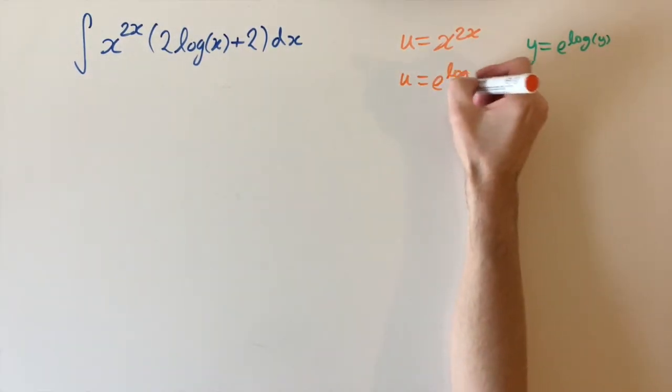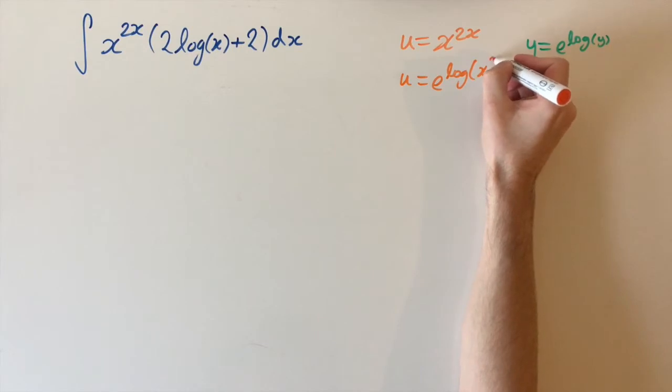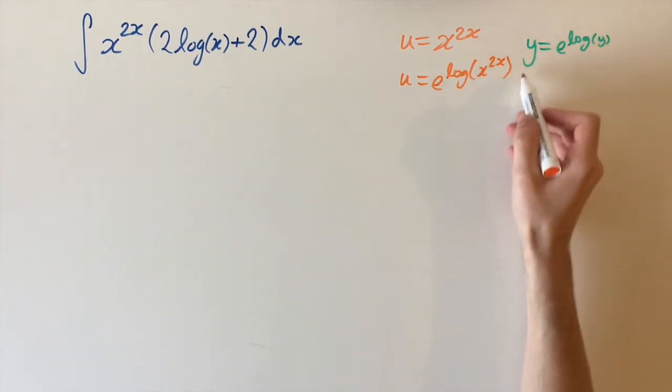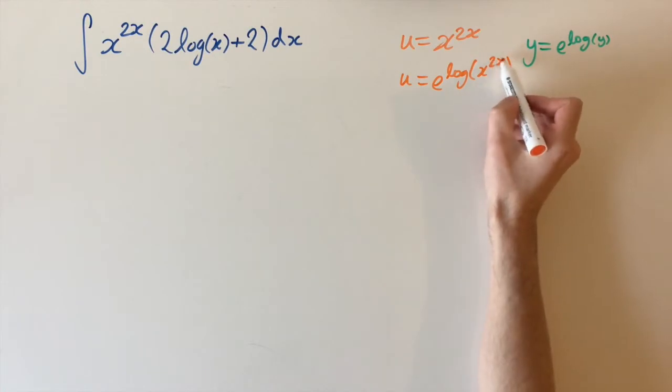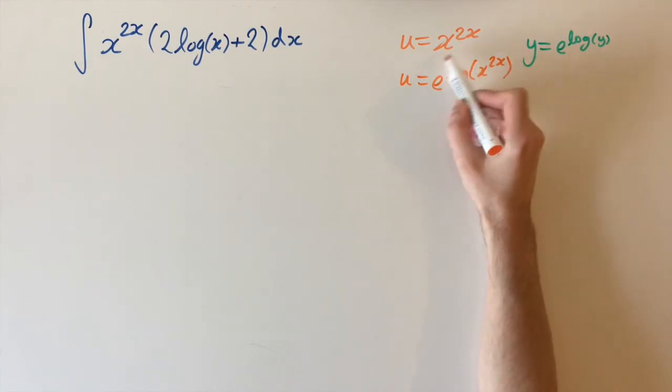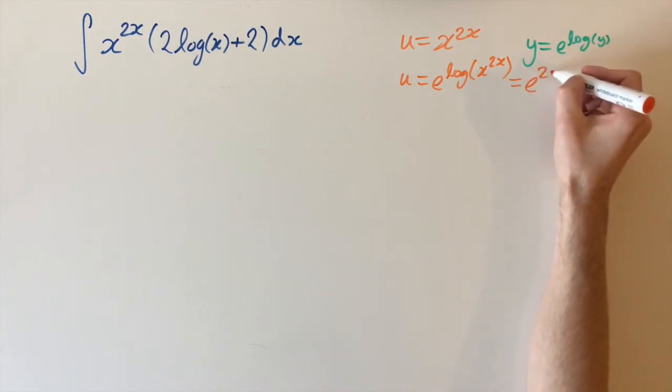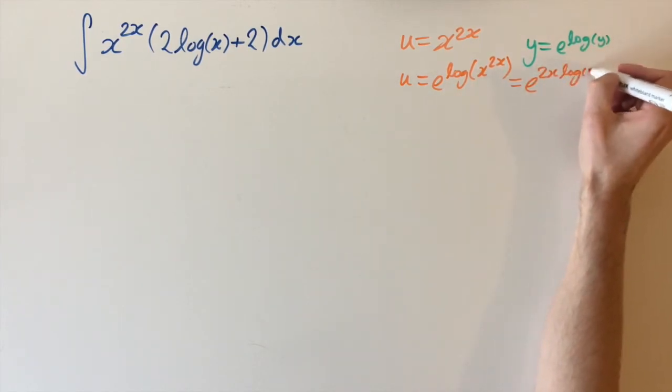This is helpful because we can use the laws of logarithms to bring down the power 2x from inside the bracket out to the front. So this is the same as e to the power of 2x times log of x.